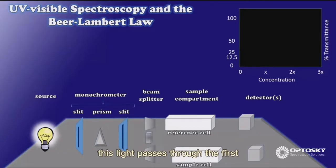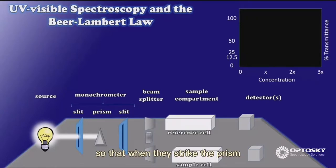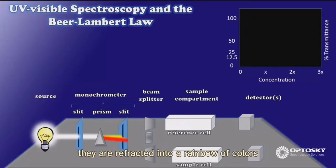This light passes through the first slit of the monochrometer, ensuring that all of those light photons are traveling along parallel pathways, so that when they strike the prism, they are refracted into a rainbow of colors.